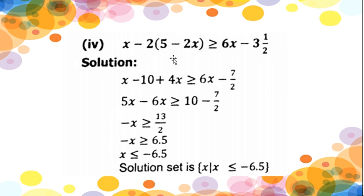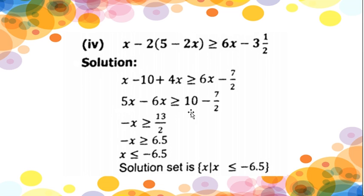Now taking all constants to the right side and all variables to the left side. x + 4x — adding these two variables with the same sign — becomes 5x. Minus 6x, because this x is positive on the right side; when moved to the left side it becomes negative. Greater than or equal to: 10, but as -10 is negative on the left hand side, when moved to the right it becomes negative, and minus 7/2. Taking LCM of 1 and 2 equals 2 — so 10×2 = 20, minus 7 gives 13/2. Since 5x - 6x have opposite signs, the answer is -x is greater than or equal to 13/2.